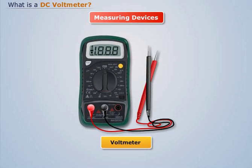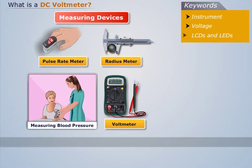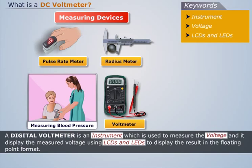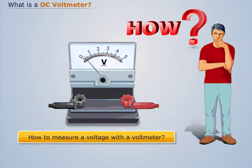A digital voltmeter is an instrument used to measure voltage. It displays the measured voltage using LCDs and LEDs in a floating-point format.